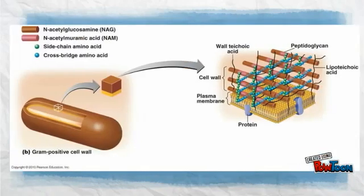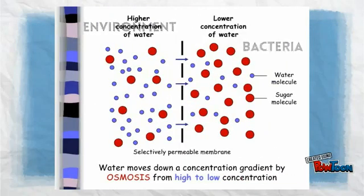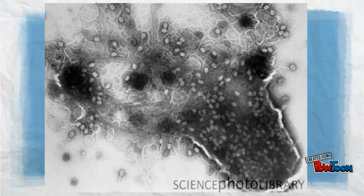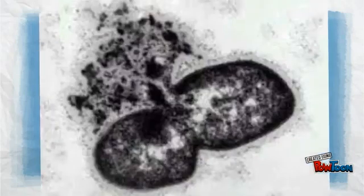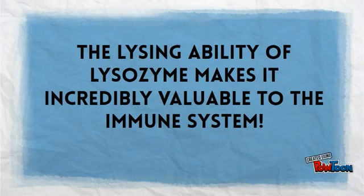So now we understand exactly how lysozyme breaks the bonds of peptidoglycans, but why is it so important? Well, it all comes down to the bacteria's cell wall. Bacteria need a strong external shell, and without it, water will flow into the cell unchecked via osmosis. The cell will eventually burst, or lyse, from the internal pressure. Thus, if you can break the glycosidic bond between two residues, you can weaken the structural integrity of the cell wall and kill the bacteria. This lysing ability of lysozyme makes it incredibly valuable to the immune system.